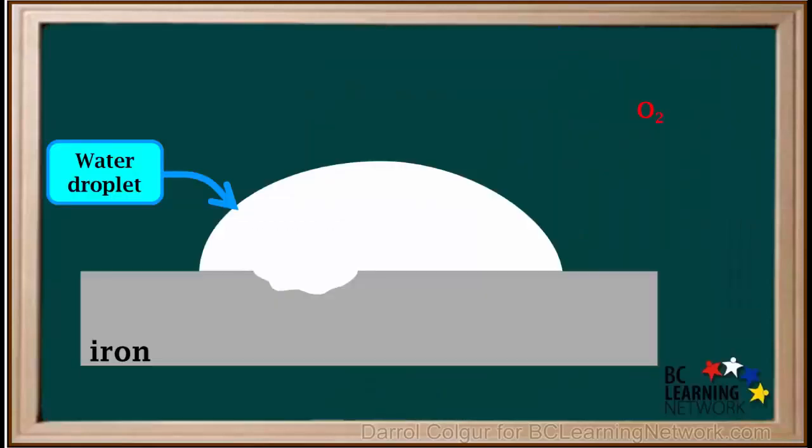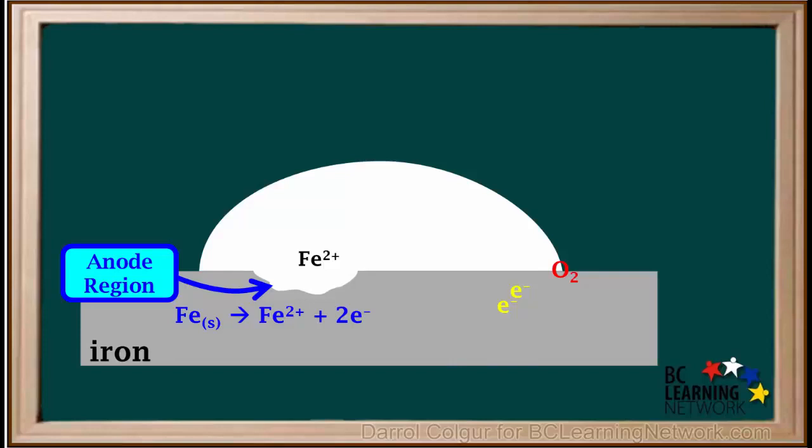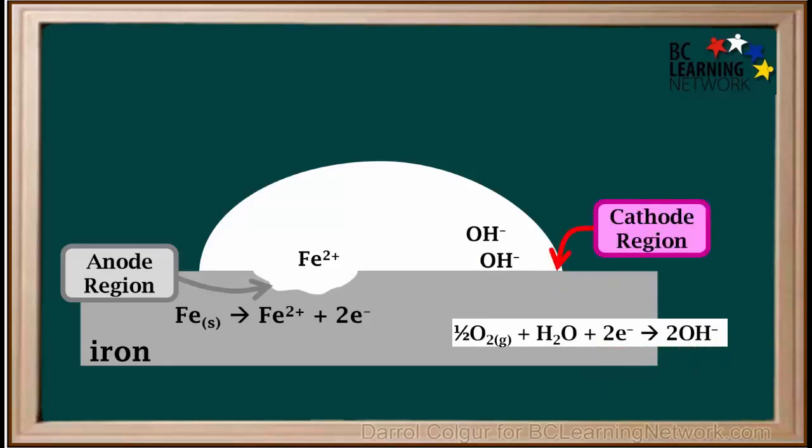Recall from the video on the causes of corrosion that when an iron surface is exposed to water and oxygen, an iron atom oxidizes to form an iron 2 plus cation, which dissolves in the water, and the electrons produced travel through the metal. The equation for this oxidation is Fe solid gives Fe2+ plus 2 electrons. This is the anode region. Oxygen from the air then comes in contact with the edge of the water droplet and the iron metal surface. And it combines with water and the electrons formed by the oxidizing iron to produce hydroxide ions. Because reduction of oxygen takes place here, this is called the cathode region.